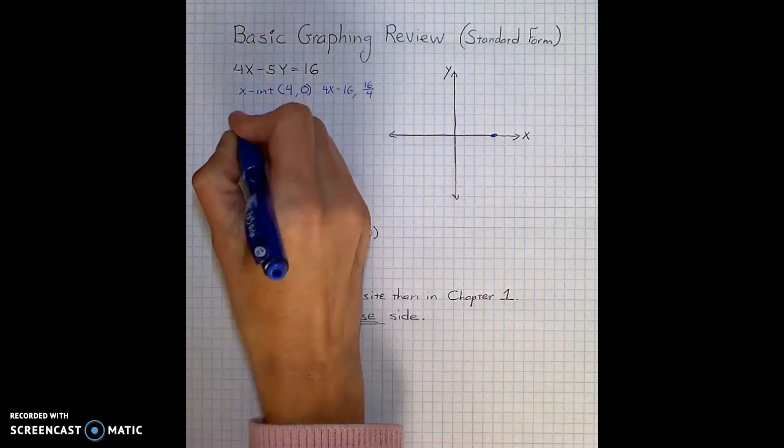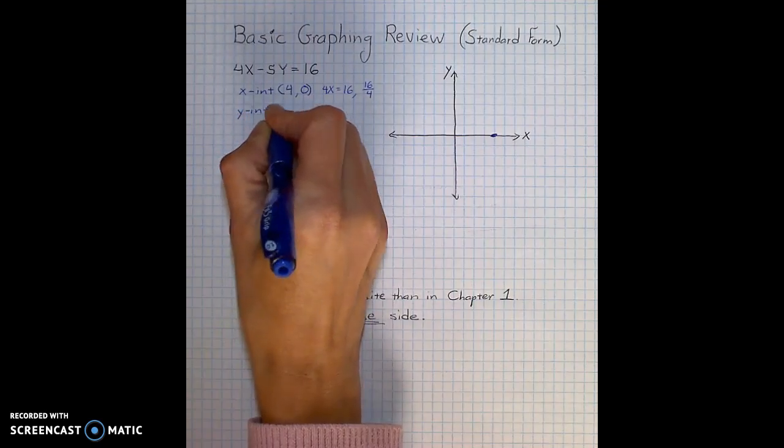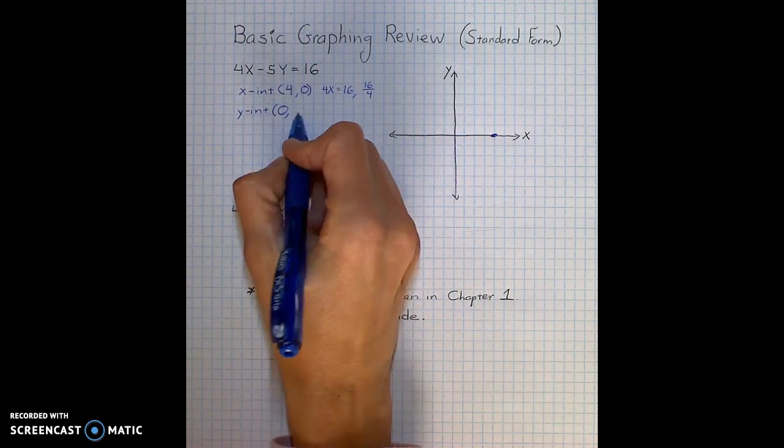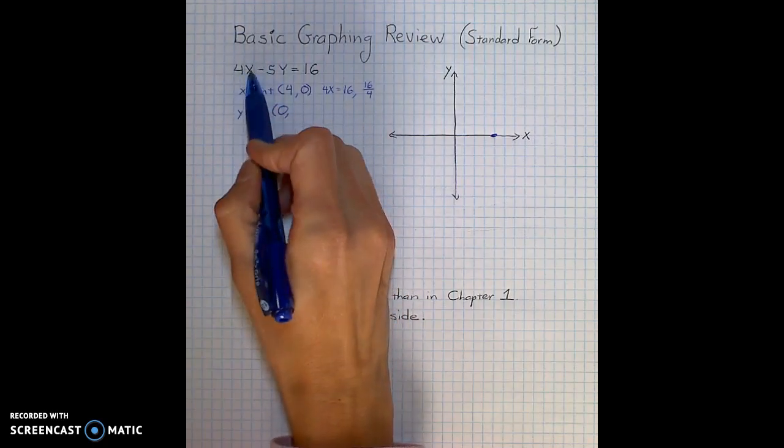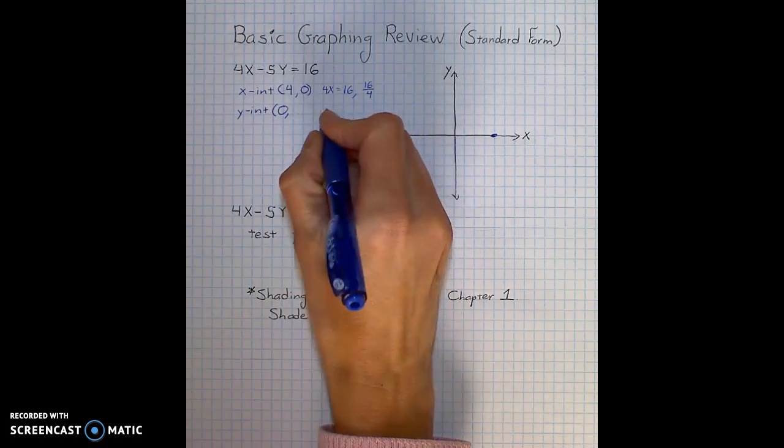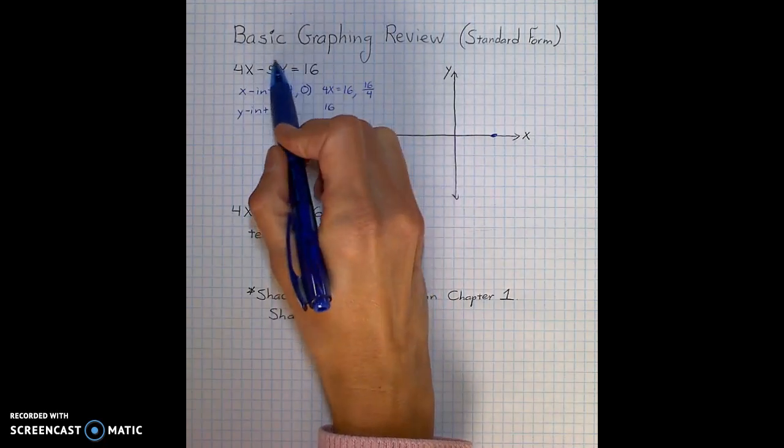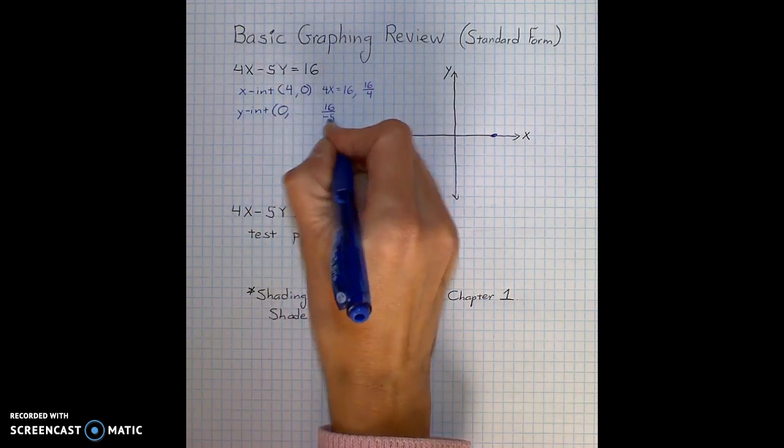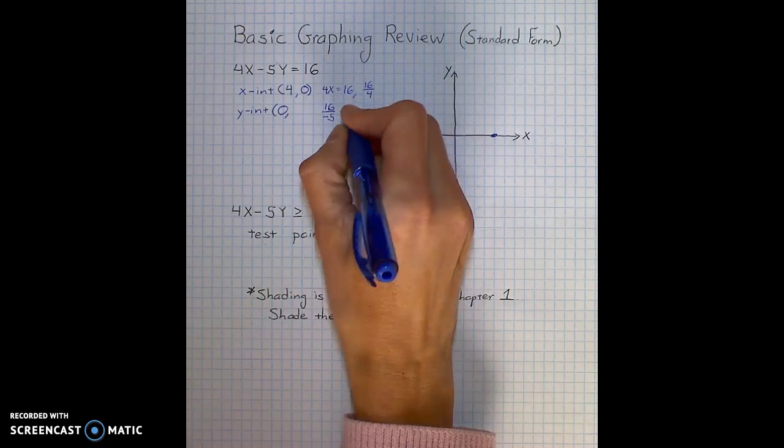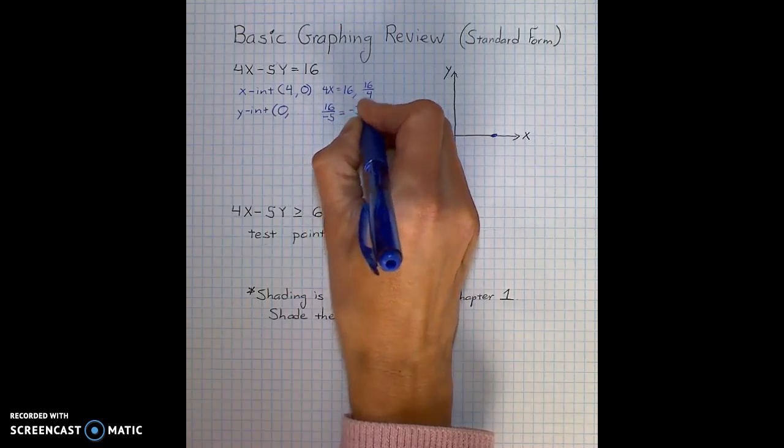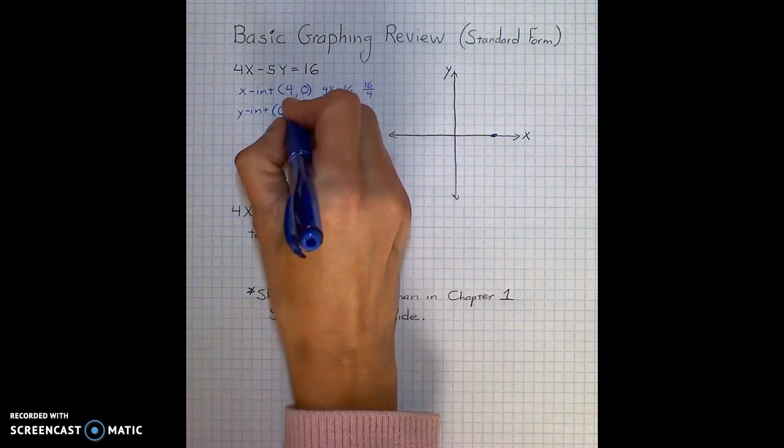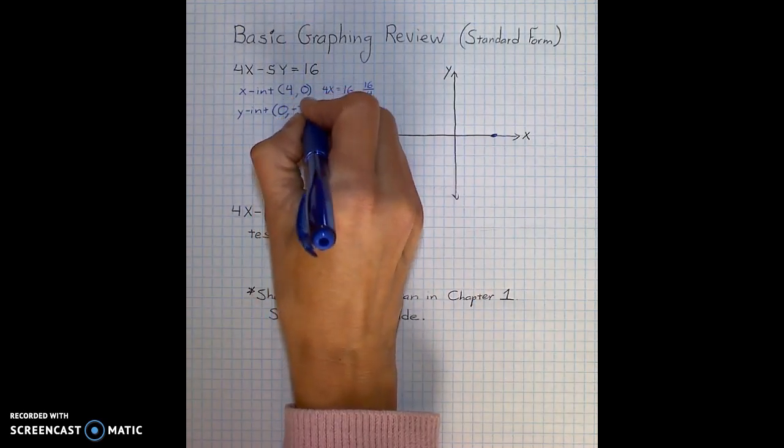The y-intercept has an x value of 0. So to calculate the y value, I substitute 0 in for x, which leaves me with just 16 on the right and the negative 5 on the left. So I divide 16 by negative 5 and end up with negative 3 and 1 fifth. In most problems, you will actually want the decimal version. I'm going to write negative 3.2.